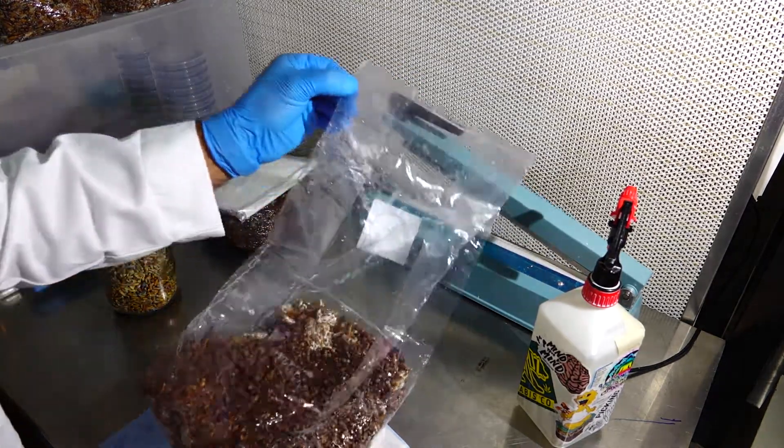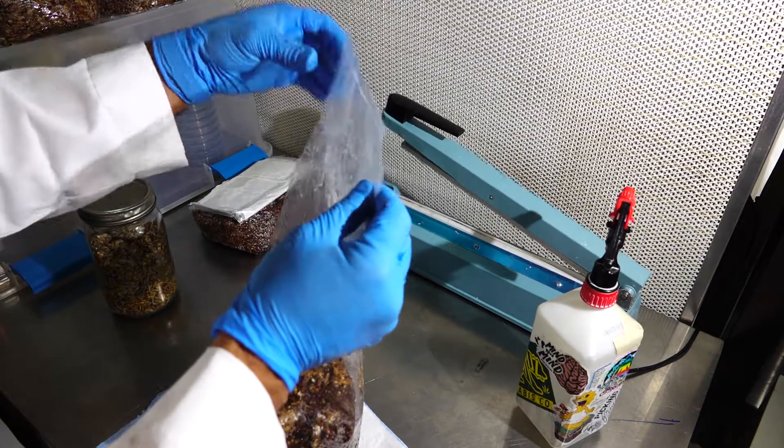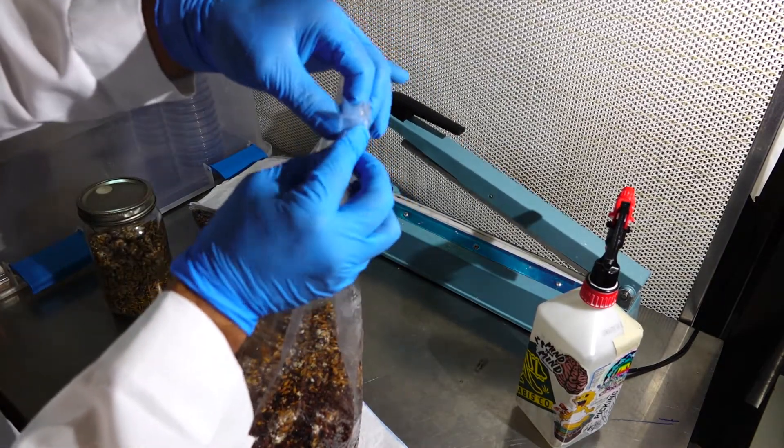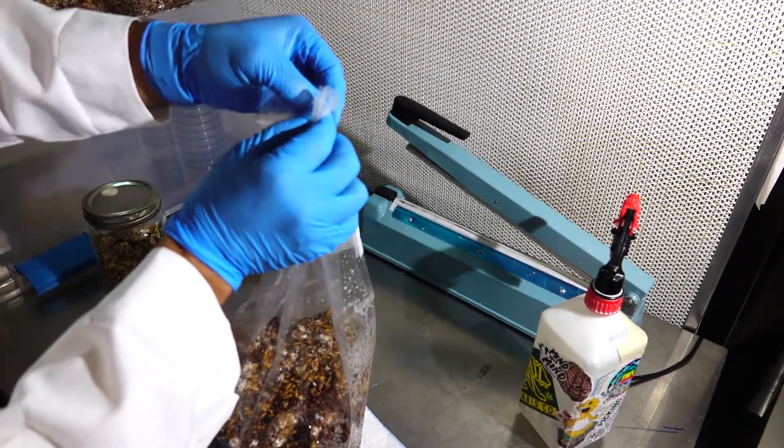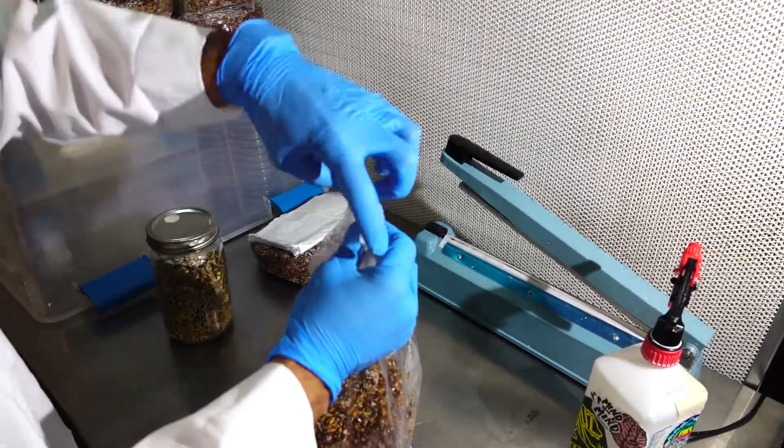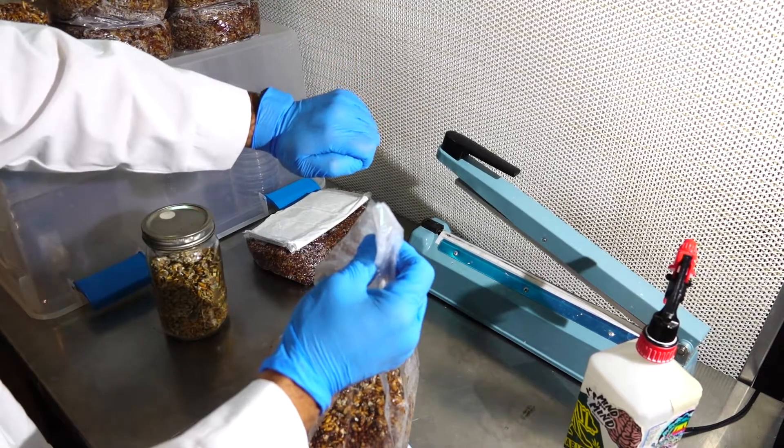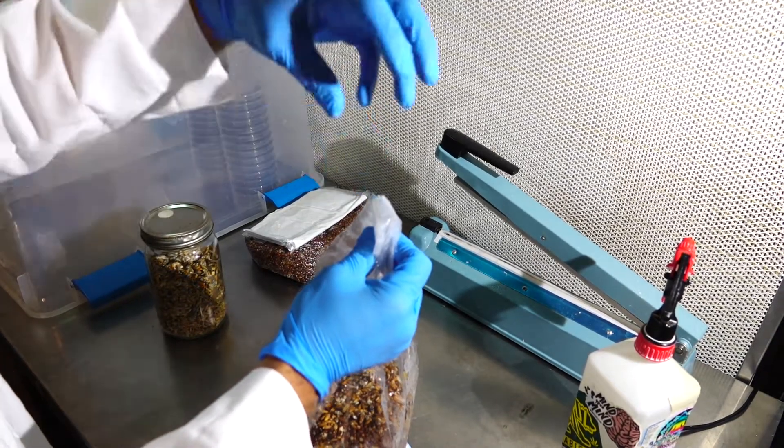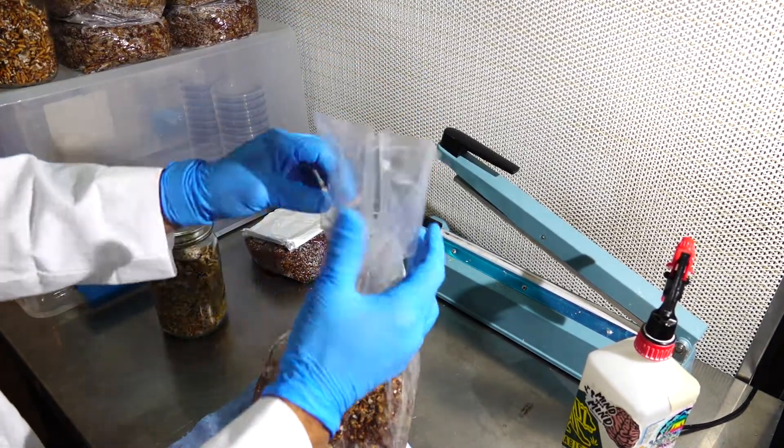If you don't have access to an impulse sealer, you can also use the accordion zip tie method where you would take the bag and you would accordion fold it, fold it over, and then put a zip tie and tie it down really tightly so that nothing can go inside of your bag after it's been transferred.